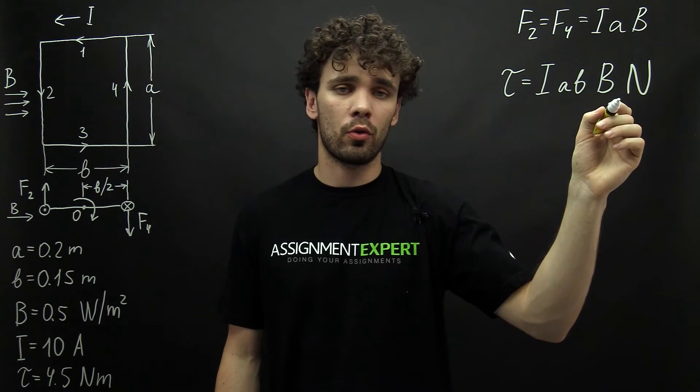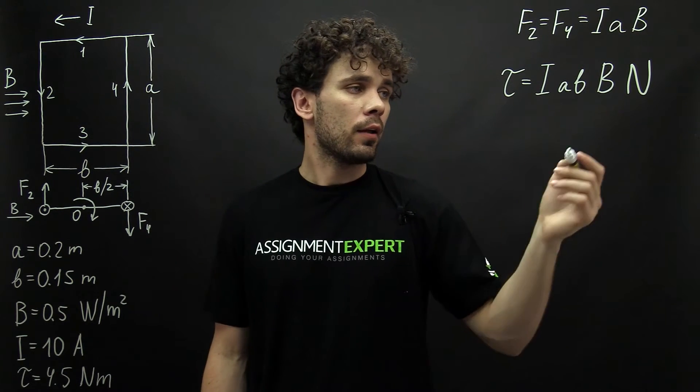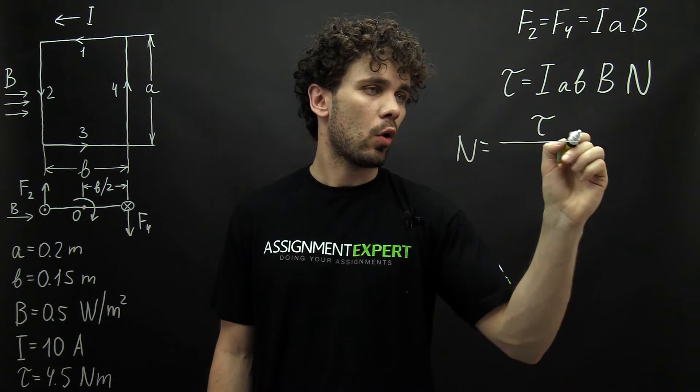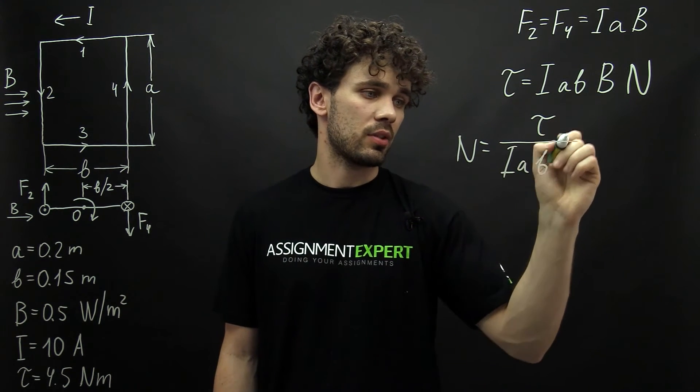we will find the total torque inside of our coil. And from here we derive N as TAU over I times A times B times B.